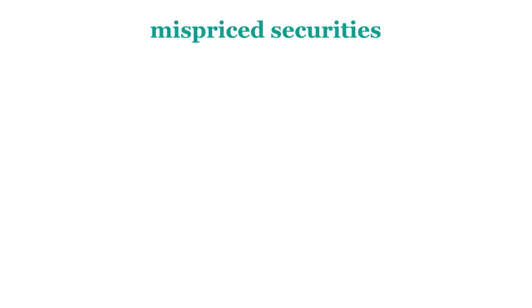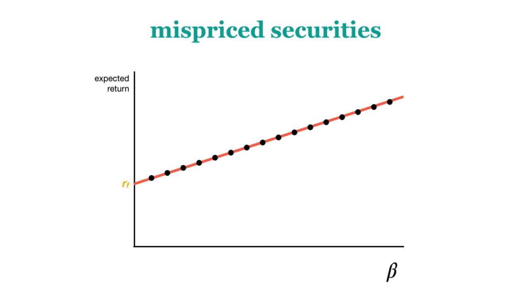This concept is useful for identifying mispriced securities. If all stocks were to earn an as expected return, our graph should look something like this, where all the points fall on the SML line. But in reality, the graph looks more like this. These securities are mispriced because compared to the risk associated with each stock, they are either earning a higher or lower return than expected.